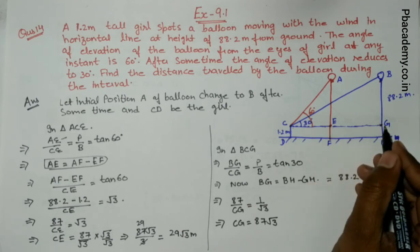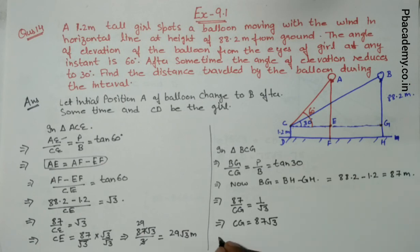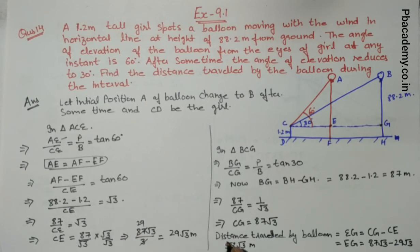We have to find out EG. Distance traveled by balloon, which is EG, equals CG minus CE. EG equals 87 root 3 minus 29 root 3. From here we can conclude that the distance traveled by the balloon is 58 root 3 meters. This is our answer.